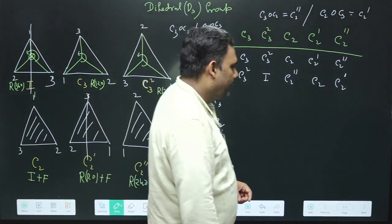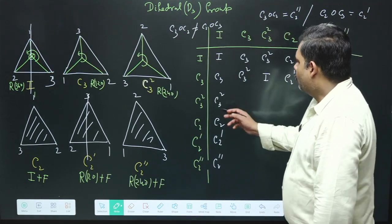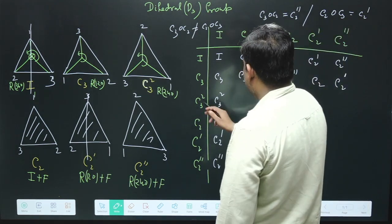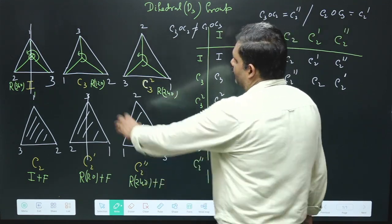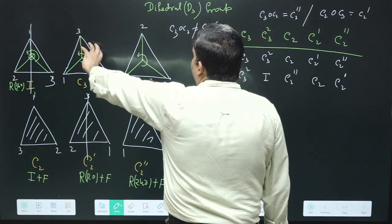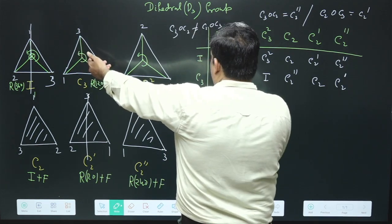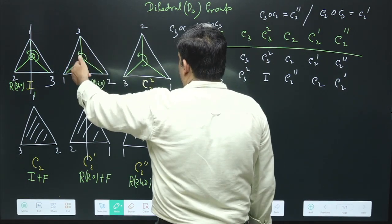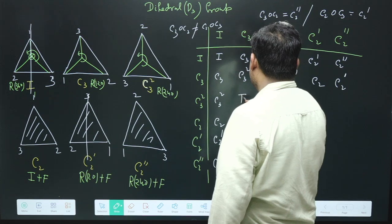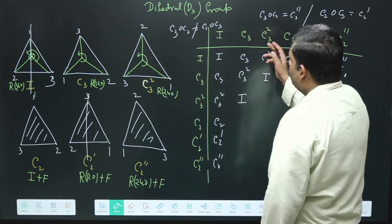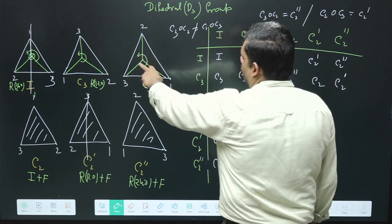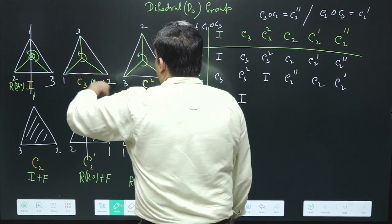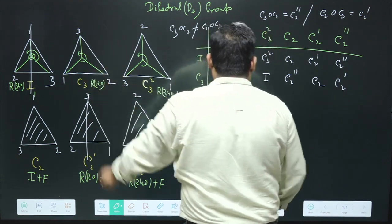Now filling the C3² row: C3² composed with C3 means rotating 120 degrees then 240 degrees, totaling 360 degrees, giving identity. C3² composed with C3² means rotating 240 degrees twice — 240 + 240 = 480 degrees, equivalent to 120 degrees — giving C3. These rotation-only compositions are straightforward.